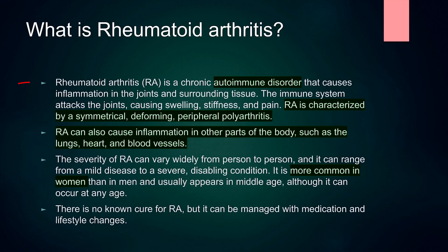We all know rheumatoid arthritis is a disease of joints. It is a chronic autoimmune disorder that causes inflammation in the joints and surrounding tissue. The immune system attacks the joints, causing swelling, stiffness and pain. Rheumatoid arthritis is characterized by a symmetrical deforming peripheral polyarthritis.